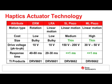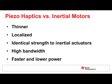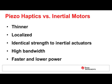The inertial motor-based actuation elements can be used to provide cost-effective haptics. However, they're characterized by a long response time, bulky size, and lack of high-definition haptics. Piezo-based haptics have a considerable advantage over the inertial motor-based haptics.